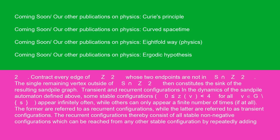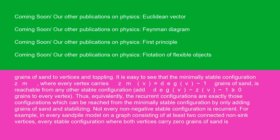The recurrent configurations consist of all stable non-negative configurations which can be reached from any other stable configuration by repeatedly adding grains of sand to vertices and toppling. It is easy to see that the minimally stable configuration Zₘ, where every vertex carries Zₘ(v) = deg(v) − 1 grains of sand, is reachable from any other stable configuration — add deg(v) − Z(v) − 1 ≥ 0 grains to every vertex. Thus, equivalently, the recurrent configurations are exactly those configurations which can be reached from the minimally stable configuration by only adding grains of sand and stabilizing.